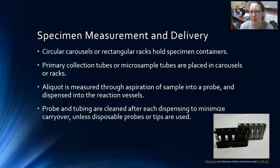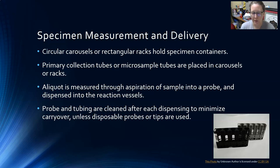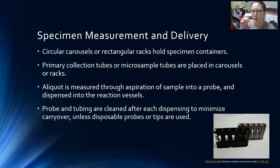They could also have adapters for small specimen cups, which would be for pediatric samples or low-volume samples from geriatric patients. Once loaded on the rack and fed into the analyzer, an aliquot is measured through the aspiration of the sample into a probe, and then it's dispensed into the reaction vessels — bits of it dispensed across different reaction vessels. An aliquot is a determined volume, a part of the sample pulled off.